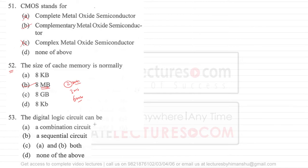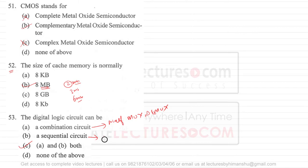Question 53 asks what a digital logic circuit can be. A digital logic circuit can be a combinational circuit or a sequential circuit, so option C is correct. Combinational circuits include half adders, full adders, multiplexers, and demultiplexers. Sequential circuits use flip-flops to store information, so any circuit made using flip-flops is a sequential circuit.